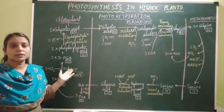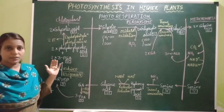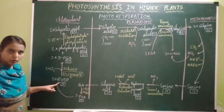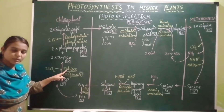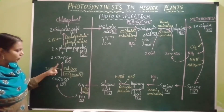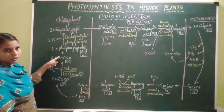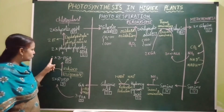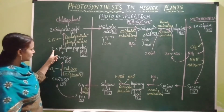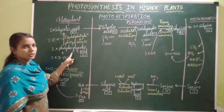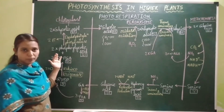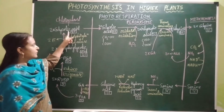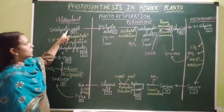Inside the chloroplast, two molecules of oxygen are fixed into two molecules of RuBP by the activity of Rubisco functioning as oxygenase, resulting in the breakdown of RuBP into two compounds: 3-PGA (3-phosphoglyceric acid, a three-carbon compound) and 2-phosphoglycolic acid (a two-carbon compound). These two molecules of phosphoglycolic acid undergo dephosphorylation by the enzyme phosphatase, forming two molecules of glycolic acid — a two-carbon compound. Two phosphates are released.